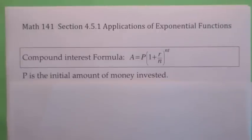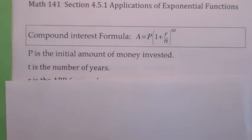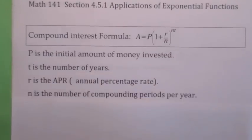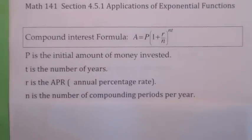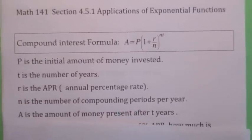P is the principal, that's how much money you start with. T is the number of years. R is the APR, it's called the annual percentage rate, although that might not be the actual percentage rate, we'll talk about that in just a minute. N is the number of compounding periods per year, that just means that's how many times the interest is computed per year. And then A would be the amount of money you have after T years.